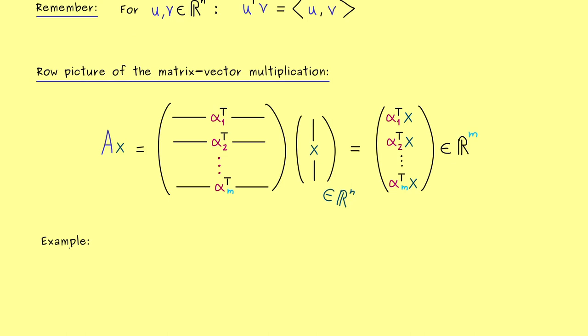There we have it, this is the row picture for remembering the matrix vector product. And then for closing this video let's look again at an example. Of course it's suitable to choose a simple one again. So A can simply be a 2×3 matrix with the entries 2, 1, 2 and 3, 2, 1. Then we multiply it with a vector x, maybe it has the components 3, 1, 0.